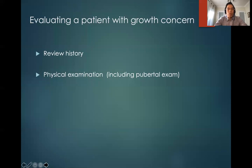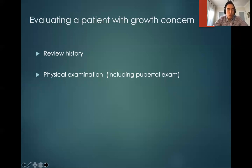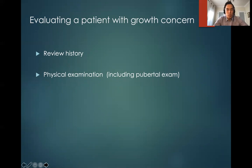When you see a patient with a growth concern, I like to stress the importance of going back to basics. We need to review history — a very detailed history including family history, birth history, and any important medical history that may cause slow growth. We also need to do a complete physical exam including a pubertal exam, because a child at an early stage of puberty will not have the same growth velocity as a child more advanced in puberty.